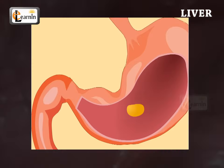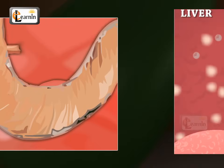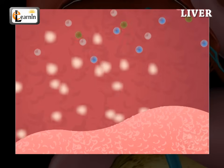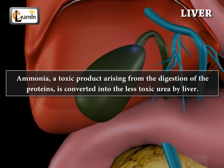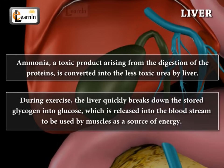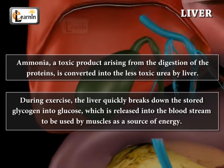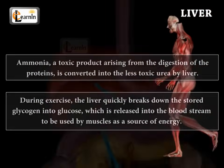When food, medicines, liquids, etc. are consumed and digested, the cells within the liver that contain a number of powerful enzymes break them down into many toxins. Ammonia, a toxin product arising from the digestion of proteins, is converted into less toxic urea by the liver. During exercise, the liver quickly breaks down stored glycogen into glucose, which is released into the bloodstream to be used by muscles as a source of energy. Another function of the liver is to make cholesterol and other fats that are needed by the body.